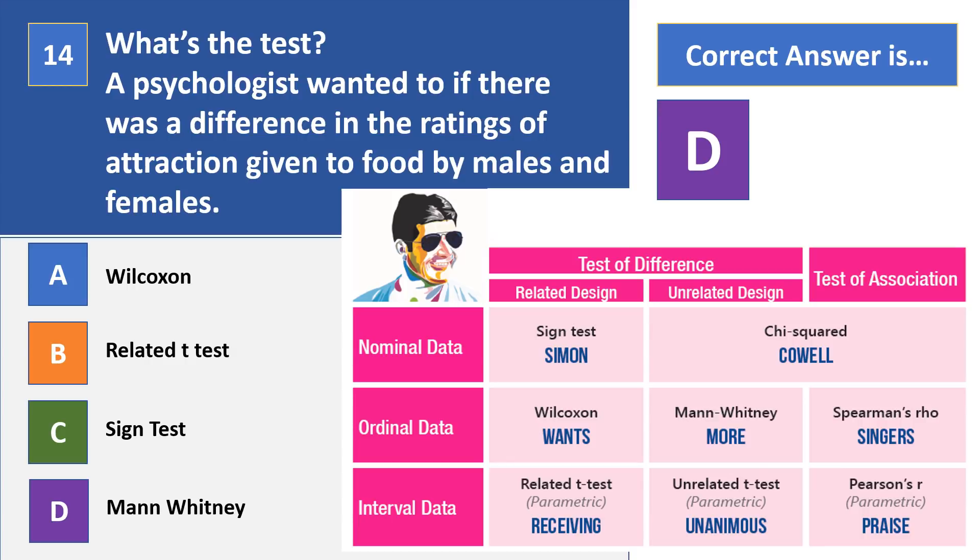So why is it Mann-Whitney? Well, we're looking for a difference in those attraction ratings given by the males and females. We've got ordinal data because we've got ratings of attraction. We're going to infer it's an independent measures design because you can't be both male and female, and in this sense it's a quasi experiment. So if you look at my little table on there, I've got test of difference and I've got unrelated design, ordinal data takes me into Mann-Whitney.